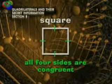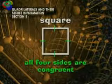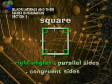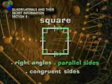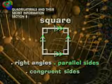A square is a rectangle whose four sides are congruent. So a square has right angles, parallel sides, and congruent sides.